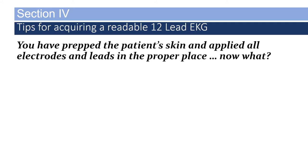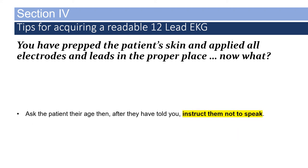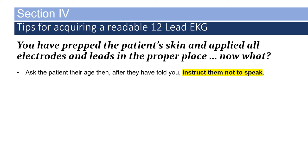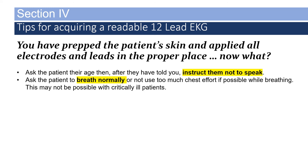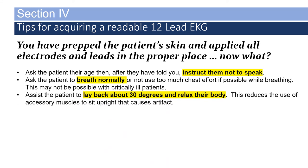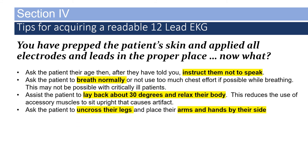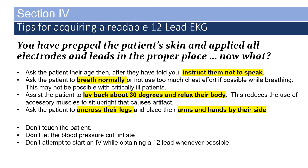You've prepped the patient's skin and applied all electrodes and leads in the proper place — now what? Ask the patient their age, as some cardiac monitors require you to input the patient's age and sex prior to pressing the acquire button. Once you have that, instruct them not to speak. Ask the patient to breathe normally or not to use too much chest effort. Assist the patient to lay back about 30 degrees — this reduces accessory muscle use and artifact. Ask the patient to uncross their legs and place their arms and hands by their side. Don't touch the patient, don't let the blood pressure cuff inflate, don't start an IV, and don't perform assessments such as neurological exams or lung sounds while obtaining the 12-lead.